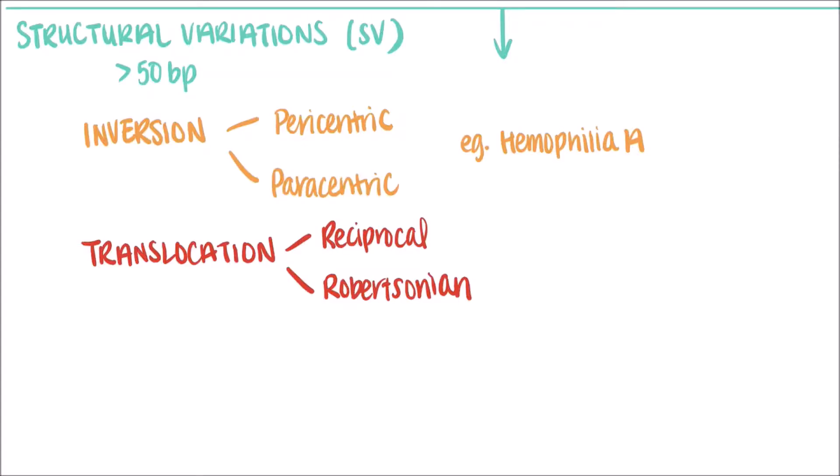People with Robertsonian translocations are usually healthy, since they still have most of their DNA. Problems can arise, however, if that translocated chromosome gets passed on to their children. Down syndrome, or Trisomy 21, is an example of a condition that can occur.